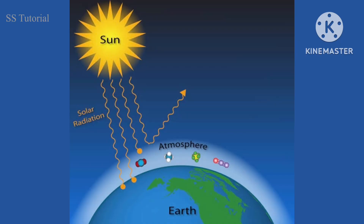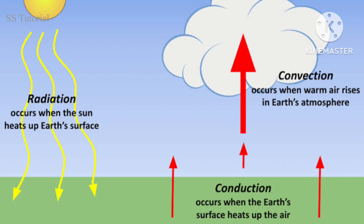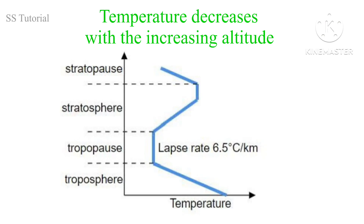Our solid earth's surface is heated directly due to solar radiation. But when solar radiation passes through the atmosphere, it does not actually heat the troposphere. The atmosphere of the troposphere is heated from below — heat is transferred by the surface of the earth through convection and conduction. Since both are comparatively slower processes, it takes longer to transfer solar energy upward. That's why temperature decreases with altitude, and when we go upward we feel cold.